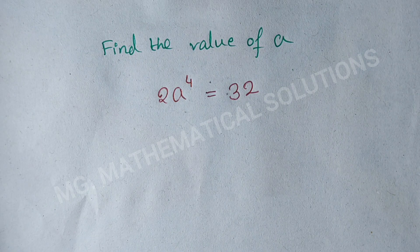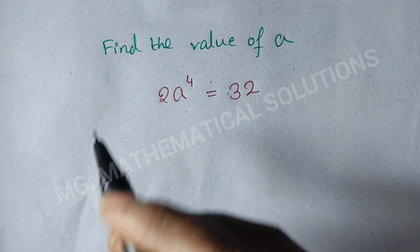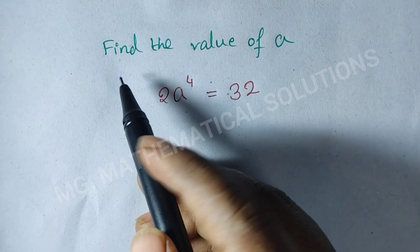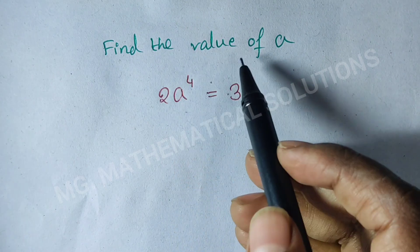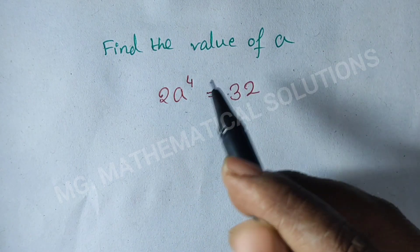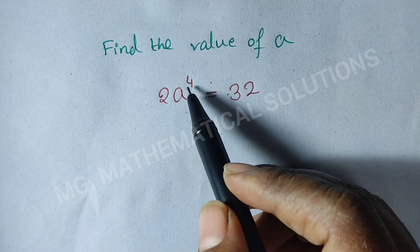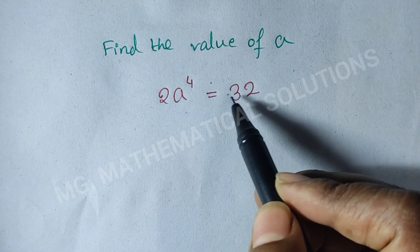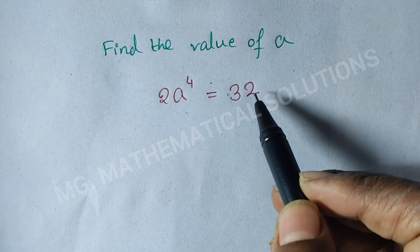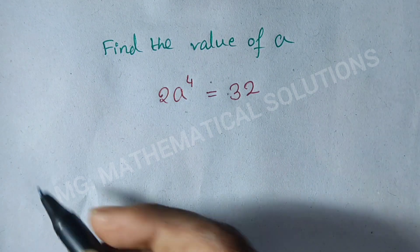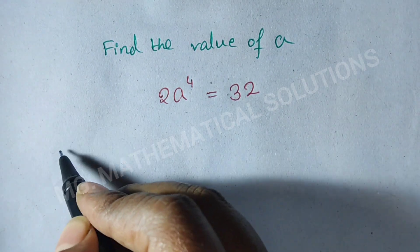Hi students, today I solve a nice math olympiad problem which is: find the value of a in the equation 2 times a to the power 4 equals 32. Let's see how to solve.